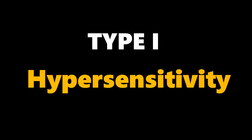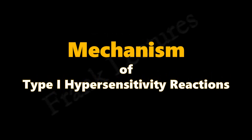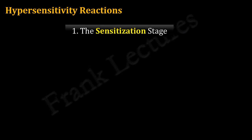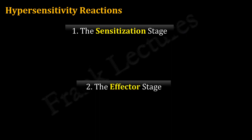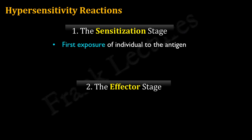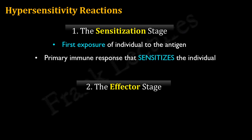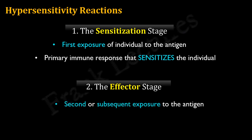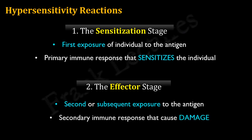Now that we are clear about the main features of type 1 hypersensitivity reactions, let's study the underlying mechanisms of these reactions. All hypersensitivity reactions have two stages of development: the sensitization stage and the effector stage. The sensitization stage refers to the first encounter of the individual with the antigen — it is the primary immune response. The effector stage is the secondary immune response upon a second or subsequent exposure to the same antigen, and in hypersensitivity reactions, this secondary immune response causes damage to the host.